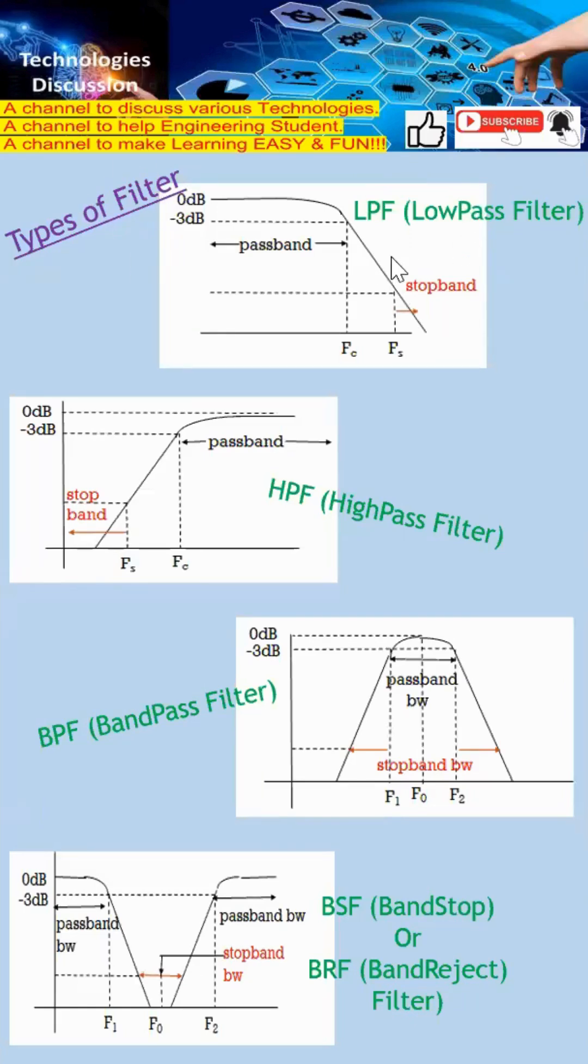There are four types of filter. Number one, low pass filter. Number two, high pass filter. Number three, band pass filter. Number four, band stop or band reject filter.